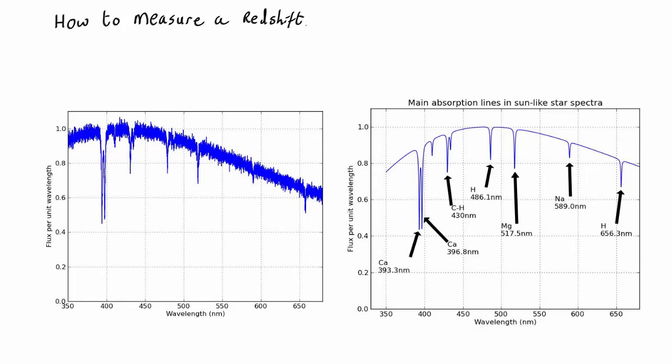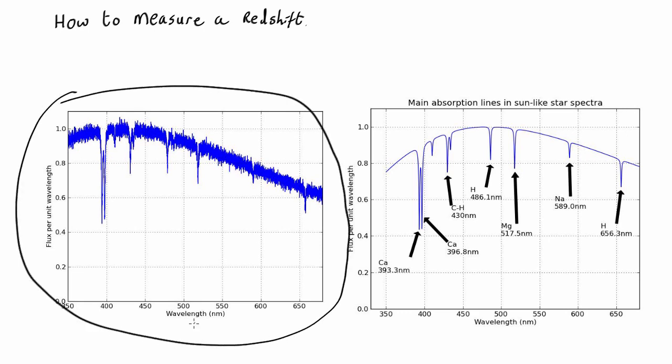In this worked example I'd like to show you how you actually go about measuring a redshift. So let's imagine we found some galaxy somewhere and we've obtained the spectrum of it. So as usual a spectrum has wavelength along here and flux per unit wavelength up here.